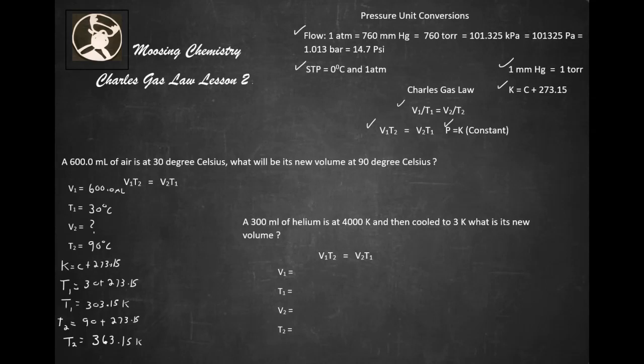Now we're ready to solve the problem. So we isolate for V2. V2 equals V1 T2 over T1.